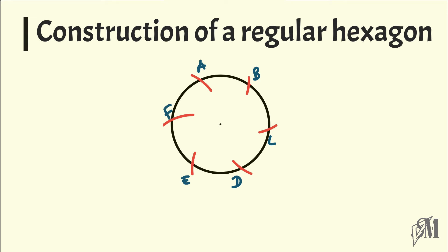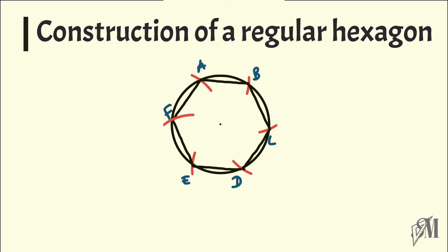Then join the points A, B, C, D, E, and F in alphabetical order to complete the regular hexagon. The length of each side of the hexagon will be equal to the radius of the circle.